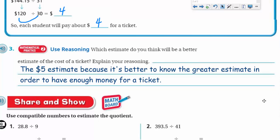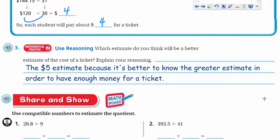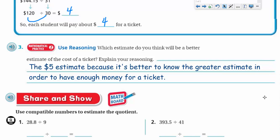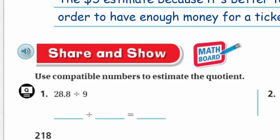Time for share and show. It's time for you to get out your little math board. Use compatible numbers to estimate the quotient. I have my one digit divisor here, so I'm really looking at my two digit number, not really interested in the 0.8. I'm going to think of my times table - what could I multiply 9 that's going to get me close to 28? Nine times 4 is 36, that's a little bit big. Nine times 3 is 27, that's pretty close. So I would use 27 divided by 9 equals 3.